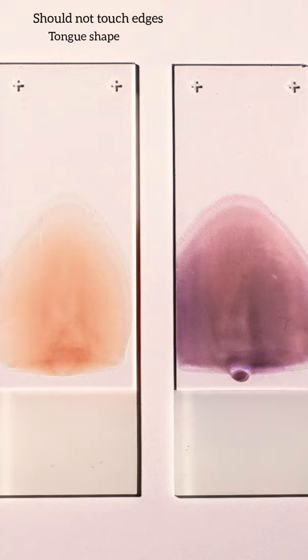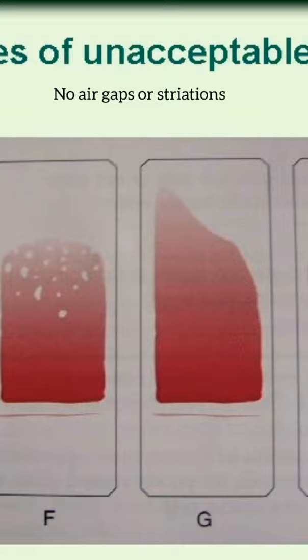The final point is no air gaps or striations. This should be very clear so that we can stain and see the blood cells.